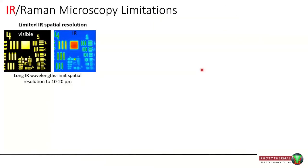Infrared spectroscopy and microscopy is a fairly mature technique and as such it's reached its limits. Its most fundamental limit is spatial resolution — since we're dealing with infrared wavelengths, our spatial resolution cannot be as good as in the visible. You can see that clearly: the visible targets are crisp and sharp, but in the infrared things blur out. Most infrared microscopes get resolutions in the order of 10 to 20 microns.